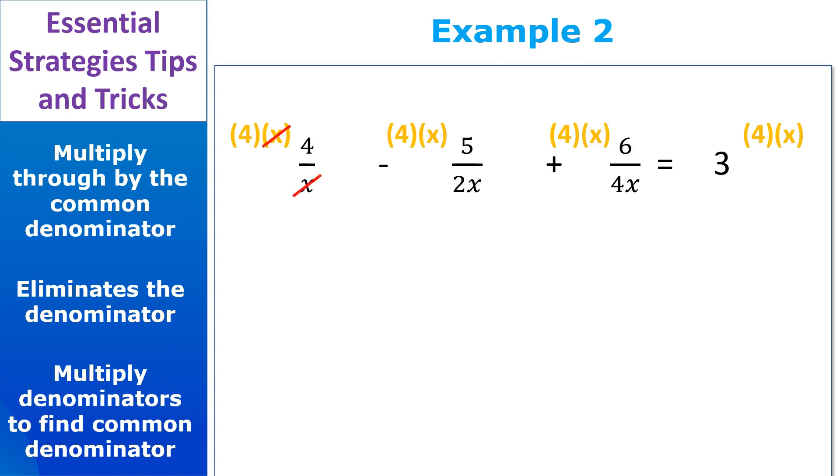So the xs cancel on the first term. The xs cancel on the second term. And 2 goes into 4, two times. The 4xs cancel on the third term. And remember, you have to multiply through the entire equation. So make sure to multiply the 4x on the right side of the equation too.